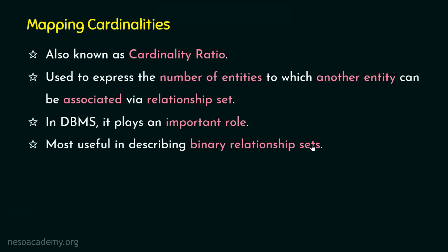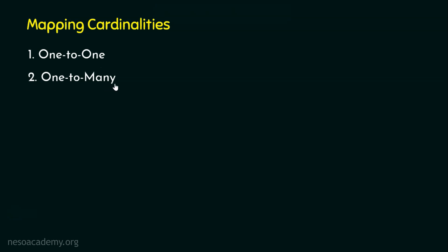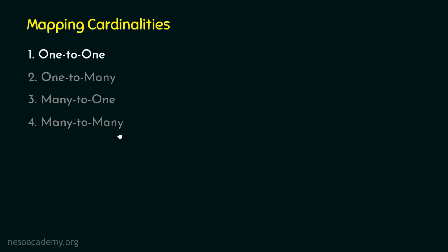Let's see the types of mapping cardinalities. There are four types: the first is one-to-one mapping cardinality, the second is one-to-many, the third is many-to-one, and the last is many-to-many. Let's focus on one-to-one cardinality first.